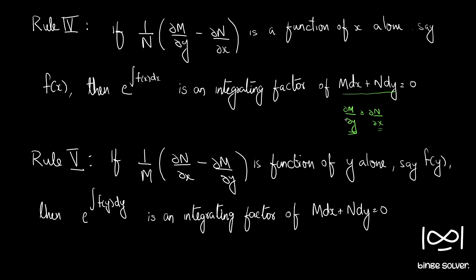Whereas if we subtract these two and divide by M instead, and if we are getting a function of y alone, then our integrating factor is e raised to the integral of f(y) dy. Here there is a change in sign — it is ∂N/∂x minus ∂M/∂y. Even if we take (∂M/∂y − ∂N/∂x)/M, if it is a function of y alone, then (∂N/∂x − ∂M/∂y)/M will also be a function of y alone. So that doesn't matter much — we take the difference either way.